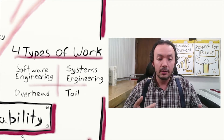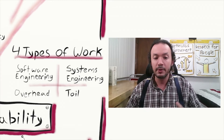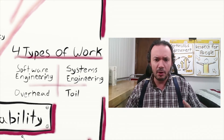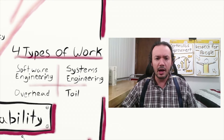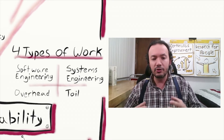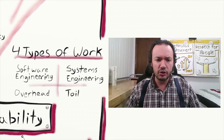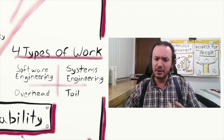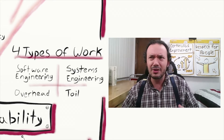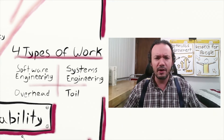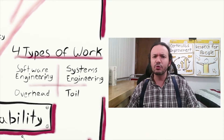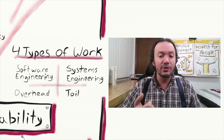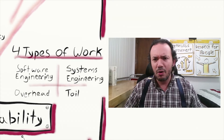In software engineering, this is the creation of new features, new product sets — things that people or systems that use our product will use. System engineering is what it takes to operate it: making the system more operable, making our build and release process simpler and more automated — anything it takes to make it require less manual intervention to get things working and keep them working. Toil is any of those repetitive, manual, automatable tasks that we end up doing a lot of but don't really add long-term value — answering tickets, doing password resets, any number of things we just keep having to do when maybe it's not that hard to automate.